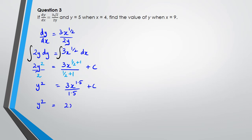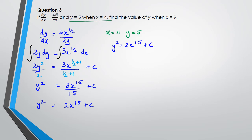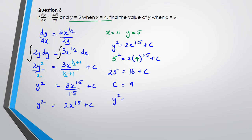Integrating 3x^(1/2) gives 3x^(3/2) divided by (3/2) plus c, which simplifies to 2x^(3/2) + c. So the equation is y² = 2x^(1.5) + c. Now to find c, we use x = 4 and y = 5: 5² = 2×(4^1.5) + c, so 25 = 2×8 + c = 16 + c, giving c = 9. The equation is y² = 2x^(1.5) + 9.